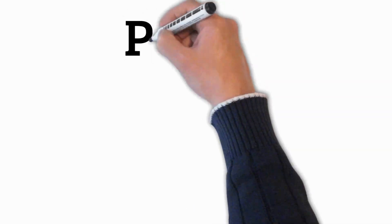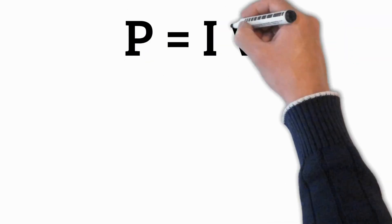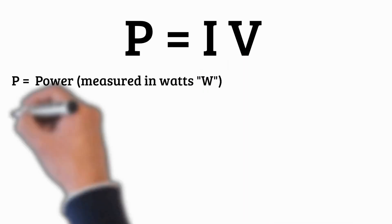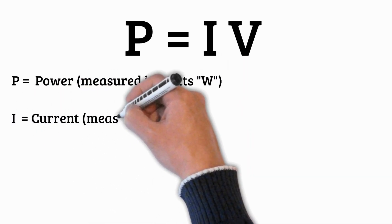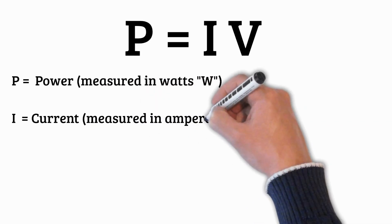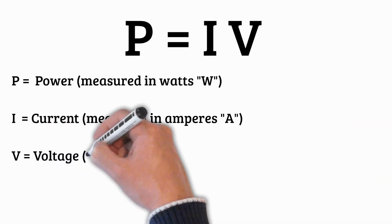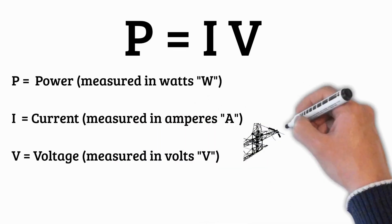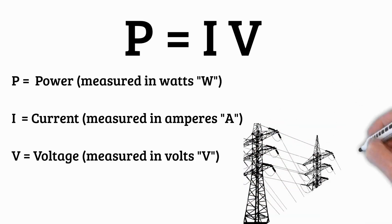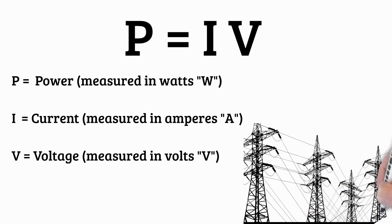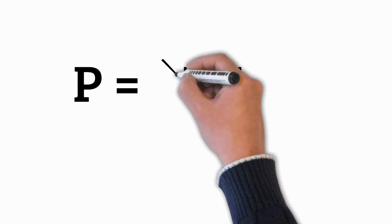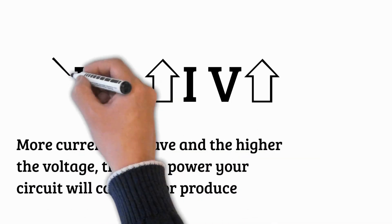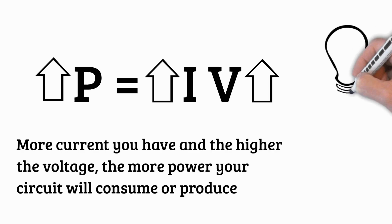The formula is P = IV. P stands for power, measured in watts (W) — the rate at which energy is used or produced. I stands for current, measured in amperes (A) — the flow of electric charge. V stands for voltage, measured in volts (V) — the electric potential difference that drives the current through a conductor. This equation tells us that power P is the product of current I and voltage V. Simply put, the more current you have and the higher the voltage, the more power your circuit will consume or produce. It's a simple but fundamental relationship that explains how energy flows in almost every electrical system, from your home's power grid to tiny microchips in computers.